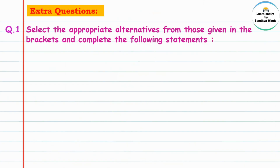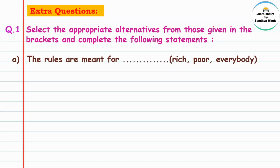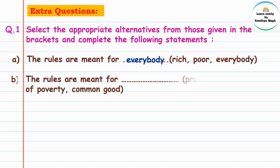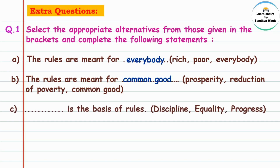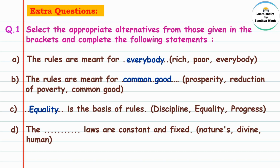Now let's learn extra questions — extra questions apan pahu, ya dene karan tumhala exam madhe madad hoil. Question 1: select the appropriate alternative from those given in brackets and complete the following statements. The rules are meant for dash — rich, poor, or everybody? Answer: everybody — saglyansathi rules banawle astat. The rules are meant for dash — prosperity, reduction of poverty, or common good? Answer: common good — jansadharnachya hitasathi.